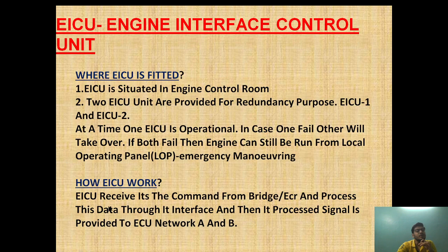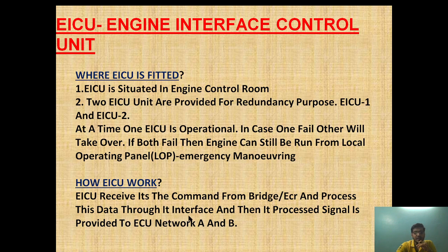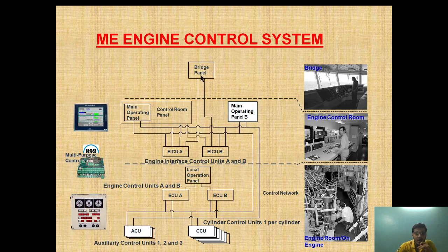What is EICU doing? EICU receives its command from the bridge or the ECR. If control is on the bridge, the command comes from the bridge, is processed to the MOP panel, then goes to the EICU. The EICU processes this data through its interface, and the processed signal is provided to ECU network A and B. So if someone asks you the function of EICU, you should say: EICU processes the data given from the bridge and after processing, converts it into a signal and gives it to ECU network A and ECU network B.